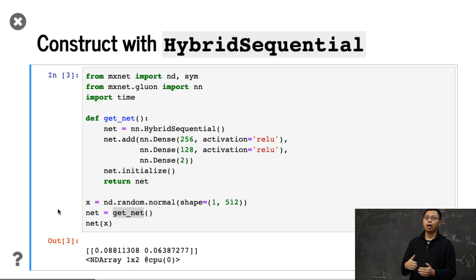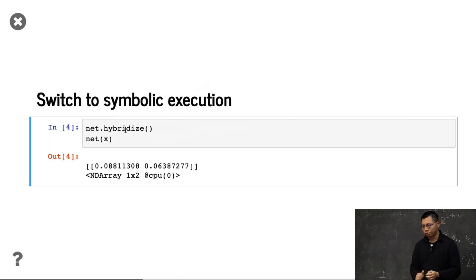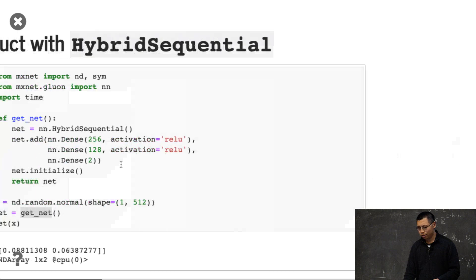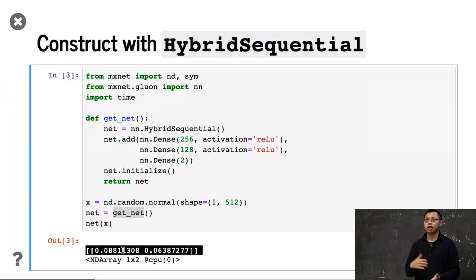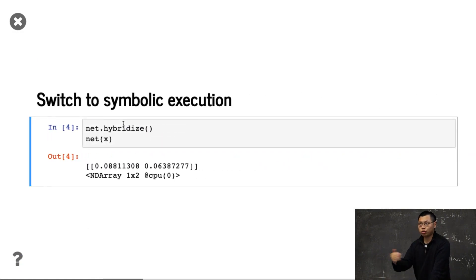This one is executed in the imperative model. Now we can call net.hybridize(), and for the backend, we're going to switch to symbolic execution. But nothing has changed on the front end — if you feed X, you get the same results. The results should be similar. Nothing has changed in terms of results. So using net.hybridize(), you can switch to the hybridized model.